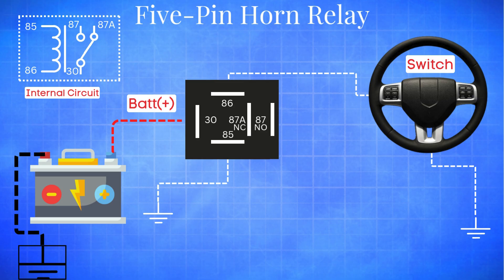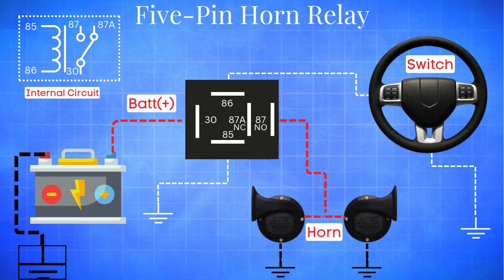Now, when you press the horn, a small current flows through pins 85 and 86, energizing the coil. This flips the internal switch, disconnecting pin 30 from 87A and connecting it to pin 87 instead. Power now flows from pin 30 to pin 87, sending current to the horn, which activates the sound. So, a 5-pin relay works like a 4-pin relay in most horn circuits, with pin 87A left unused.